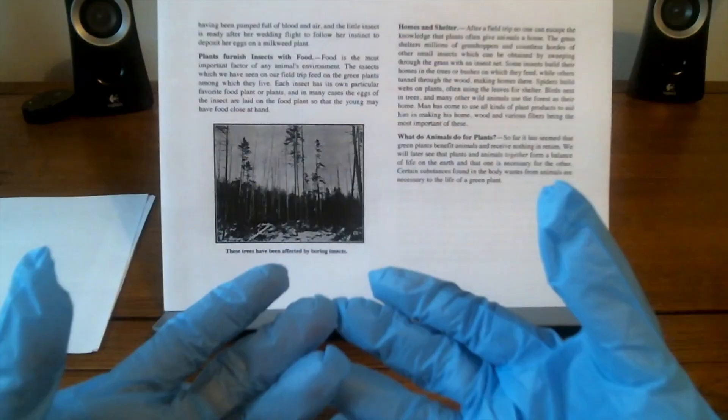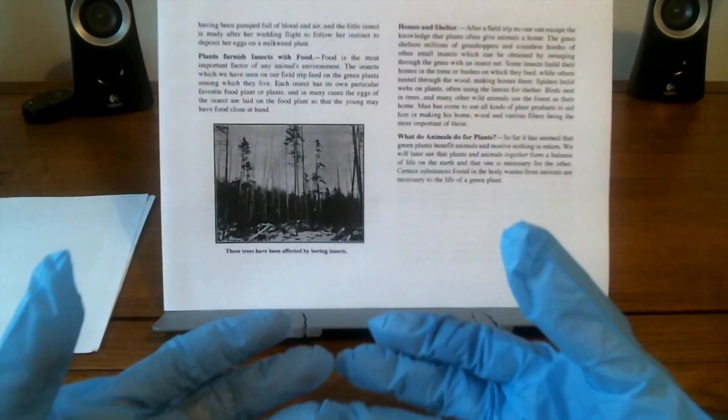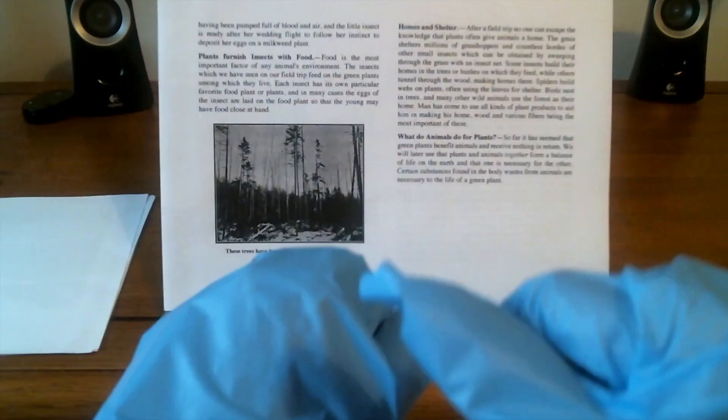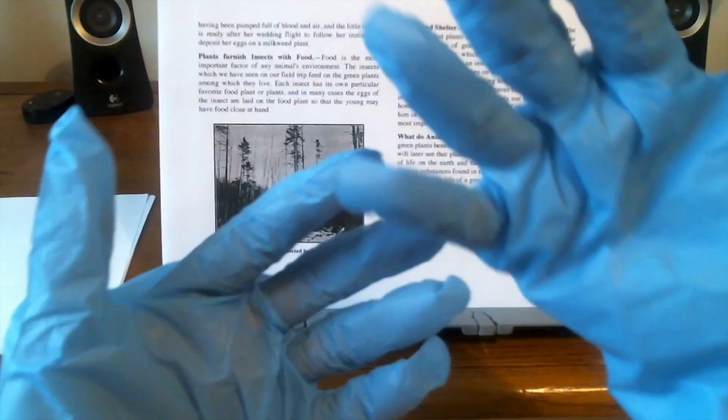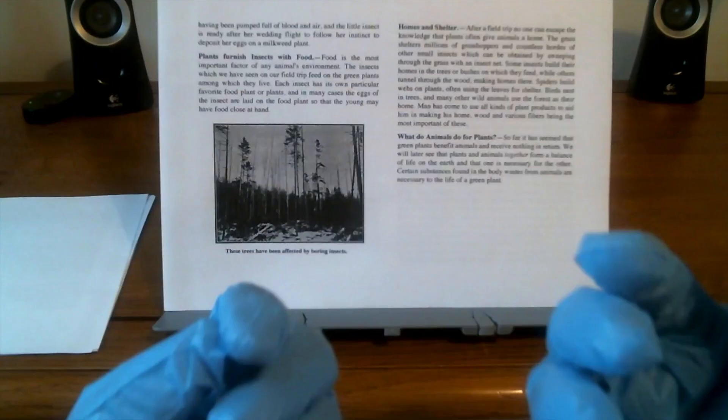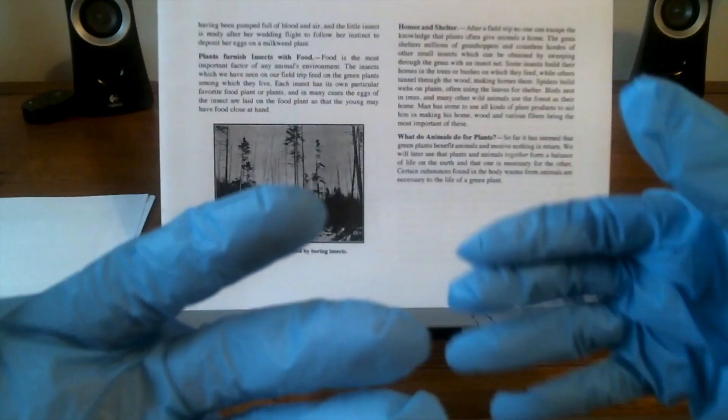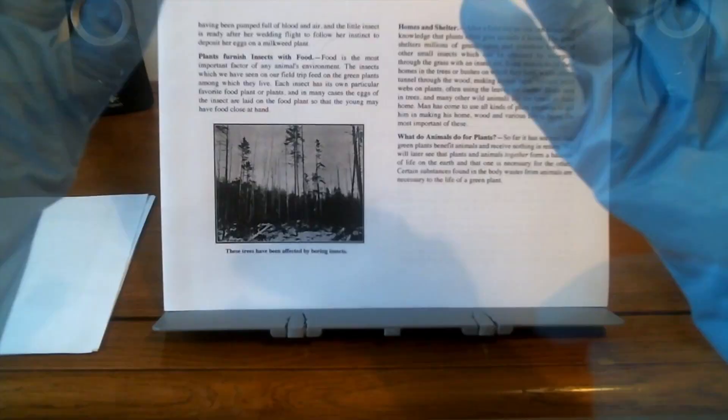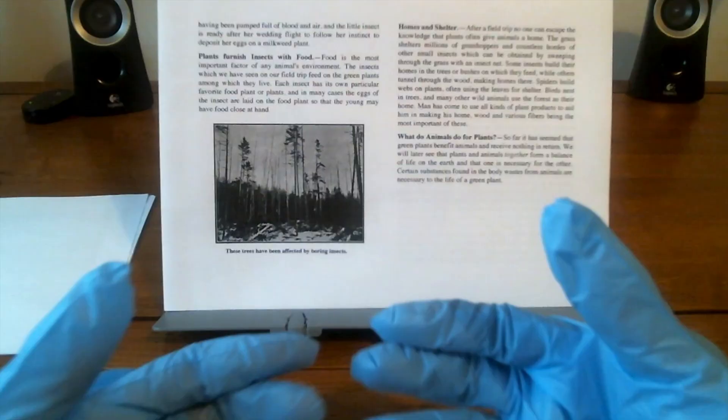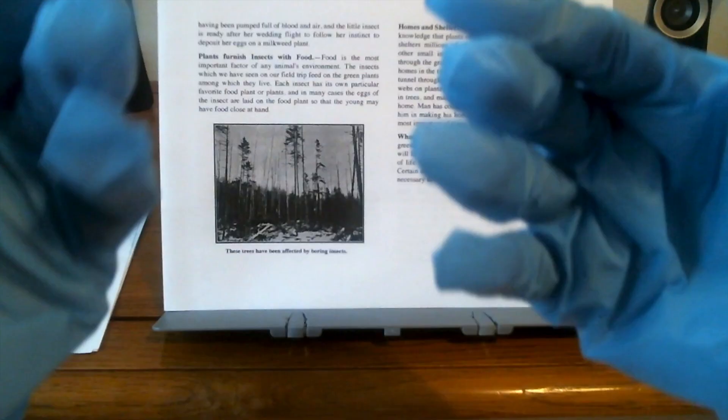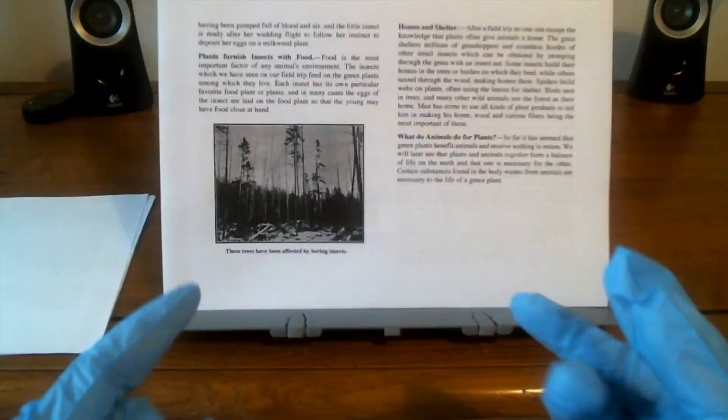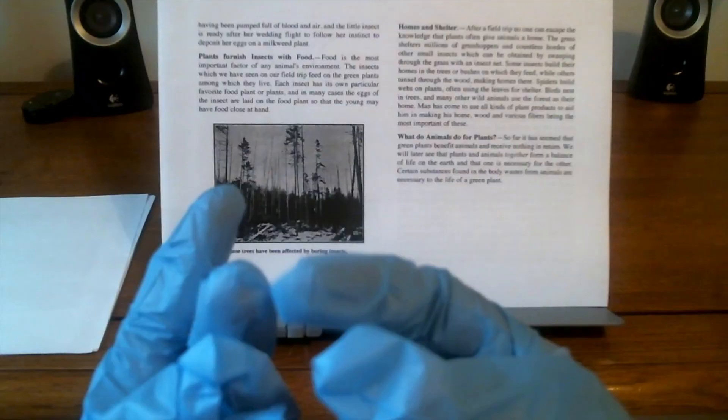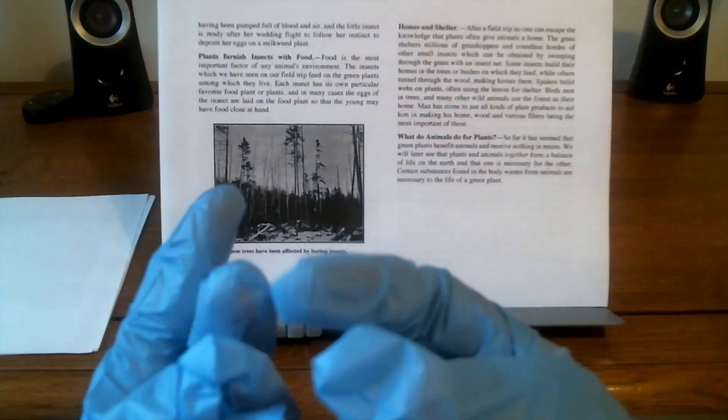Our next topic, then. How do plants furnish insects with food? Food is the most important factor of any animal's environment. The insects, which we have seen on our previous field trips, feed on the green plants along which they live. Each insect has its own particular favorite food plant or plants. And in many cases, the eggs of the insect are laid on the food plant so that the young may have food close at hand.